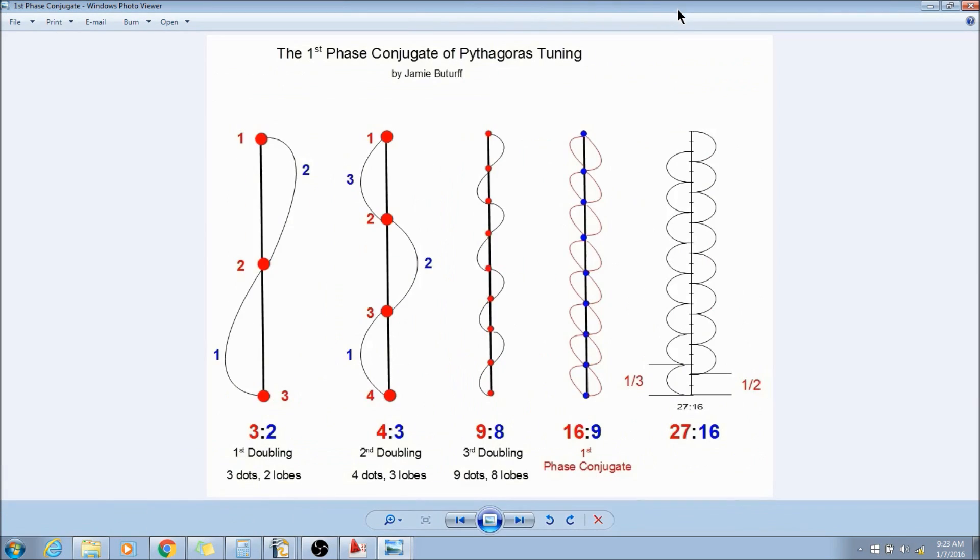And then we come to the first phase conjugate. Let me explain this a little bit better to you. This is the first doubling. What I've done is I've drawn three dots—one, two, and three.